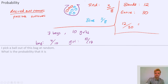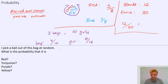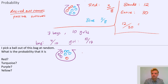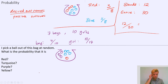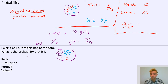So that's the basics of probability. There's a quick question: I pick a ball out of this bag at random. It's going to have some purples, some blues, and one red. What's the probability that it's red, turquoise, purple, or yellow? The probability that it's red: the desired outcome is a red ball, and there's one of those out of eight balls altogether. So it's one eighth.